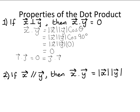A second property of the dot product is: if vector x is parallel to vector y, then the dot product of x with y is equal to the modulus of vector x times the modulus of vector y. Again, from the definition of the dot product, the dot product of vector x with y equals the modulus of vector x times the modulus of vector y times the cosine of the smaller angle between x and y.